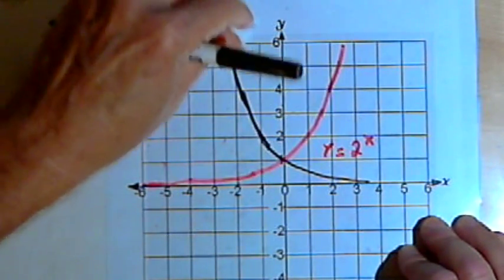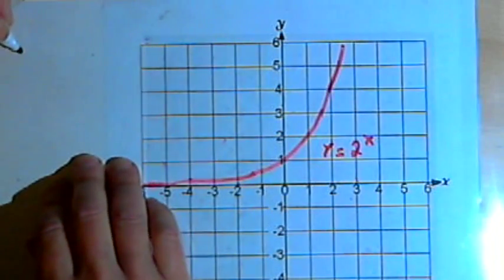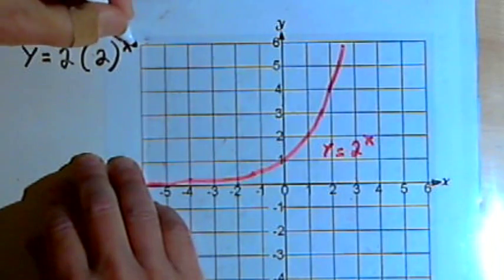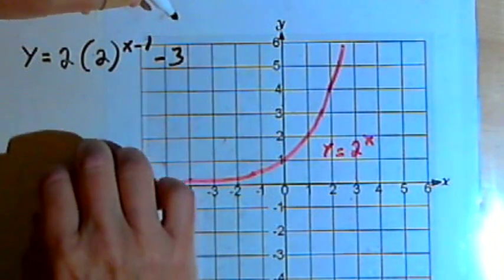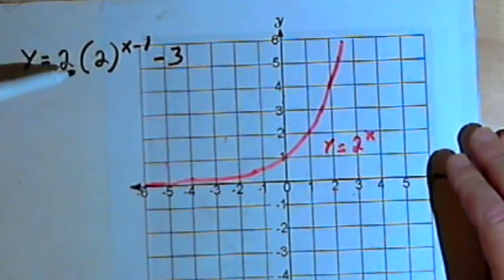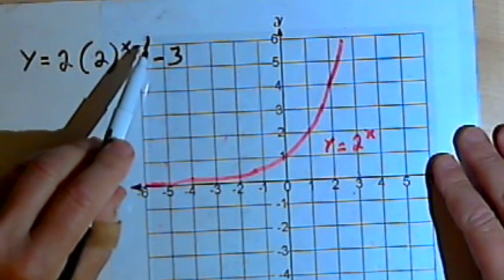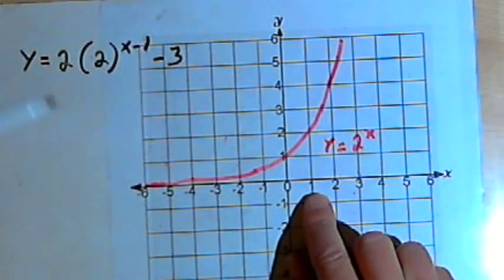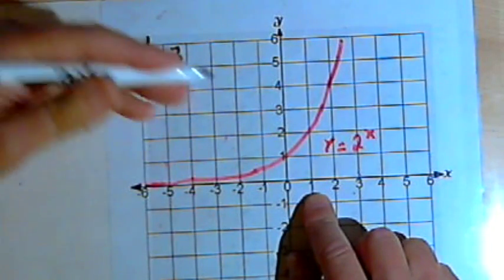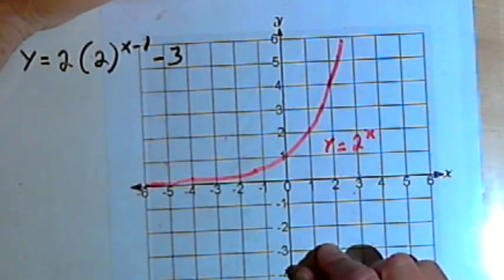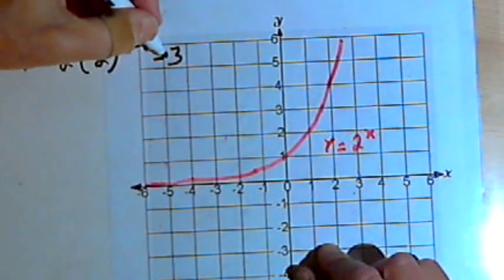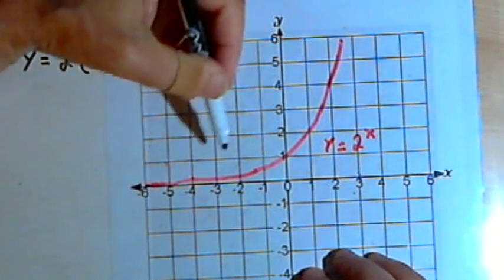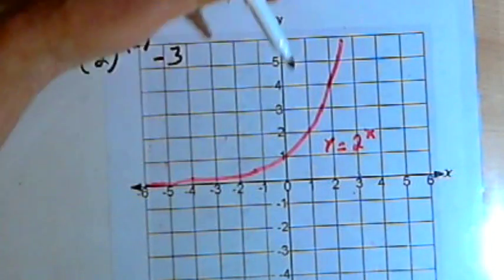So those are the horizontal transformations we can make. Of course, we can combine some of these, and this is where it gets tricky. So I can have y equals 2 times 2 to the x minus 1 minus 3. The x minus 1 is going to shift the graph one unit horizontally to the right. The coefficient 2 is going to stretch the graph upward by a factor of 2. And then the negative 3 is going to drop the whole thing down 3 units.